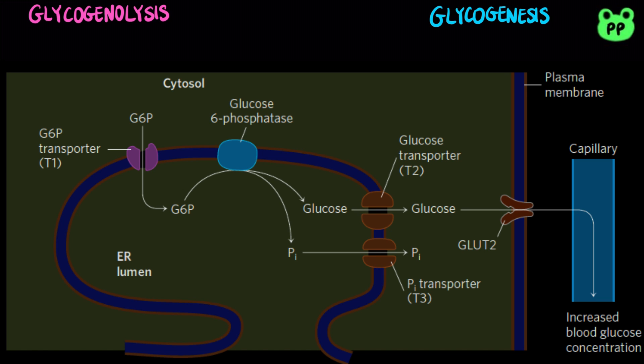In liver, glucose-6-phosphate enters the lumen of the endoplasmic reticulum through the T1 transporter, and it is hydrolyzed by glucose-6-phosphatase into glucose and inorganic phosphate, which are transported out of the ER lumen through T2 and T3 transporters, and exit liver cells or hepatocytes through the GLUT2 transporter in the plasma membrane. The liver releases glucose when the blood glucose level drops.